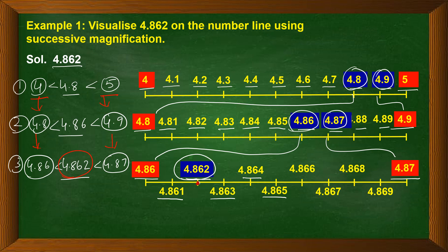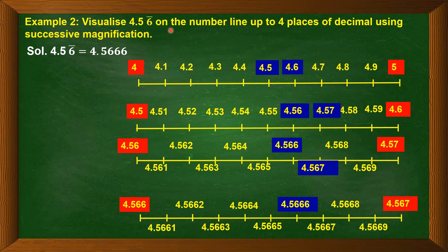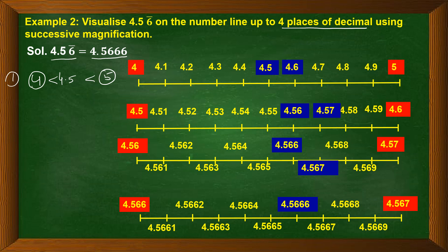Let us move to Example 2: Visualize 4.56̄ on the number line up to 4 places of decimal using successive magnification. Here 6 is being repeated, and we want 4 decimal places, so we write it as 4.5666. The first step is to take the first decimal point 4.5, which lies between 4 and 5 — so between 4 and 5 we get 4.5. In the second step, 4.56 lies between 4.5 and 4.6.